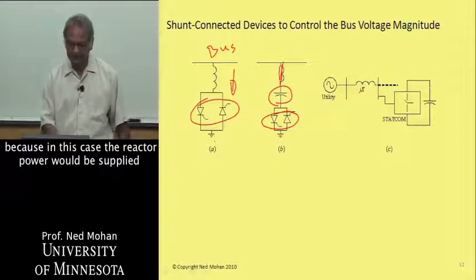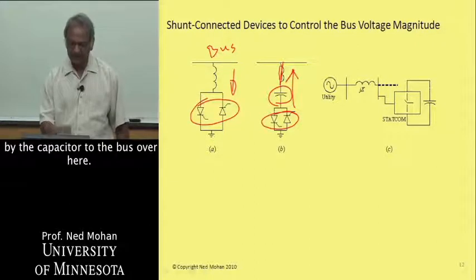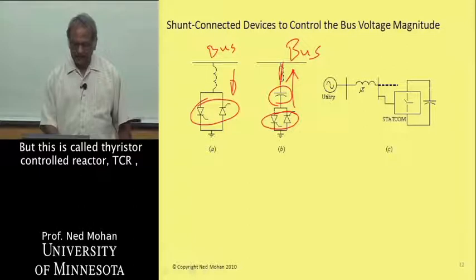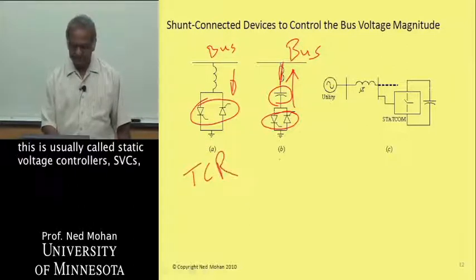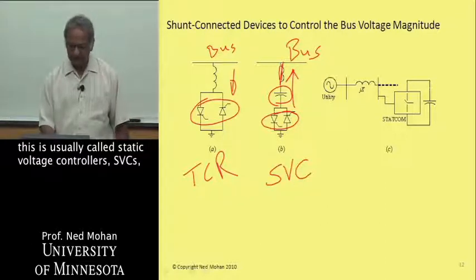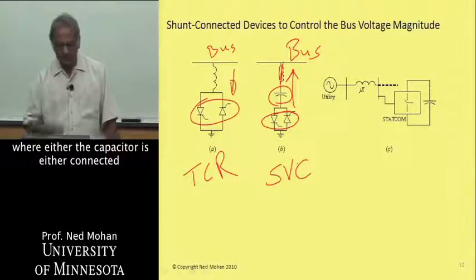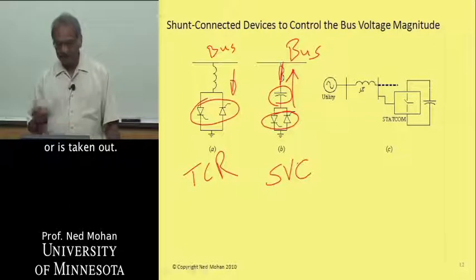In this case, reactive power is supplied by the capacitor to the bus. This is called a thyristor-controlled reactor, or TCR. These are usually called static voltage controllers, or SVCs, where the capacitor is either connected or disconnected.